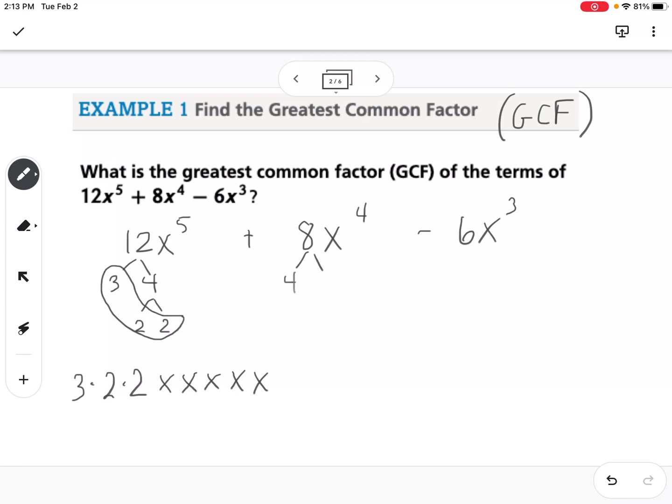Now 8 is 4 times 2, and 4 is 2 times 2. So my prime factors there are 2 times 2 times 2, and then I have 1, 2, 3, 4 x's.